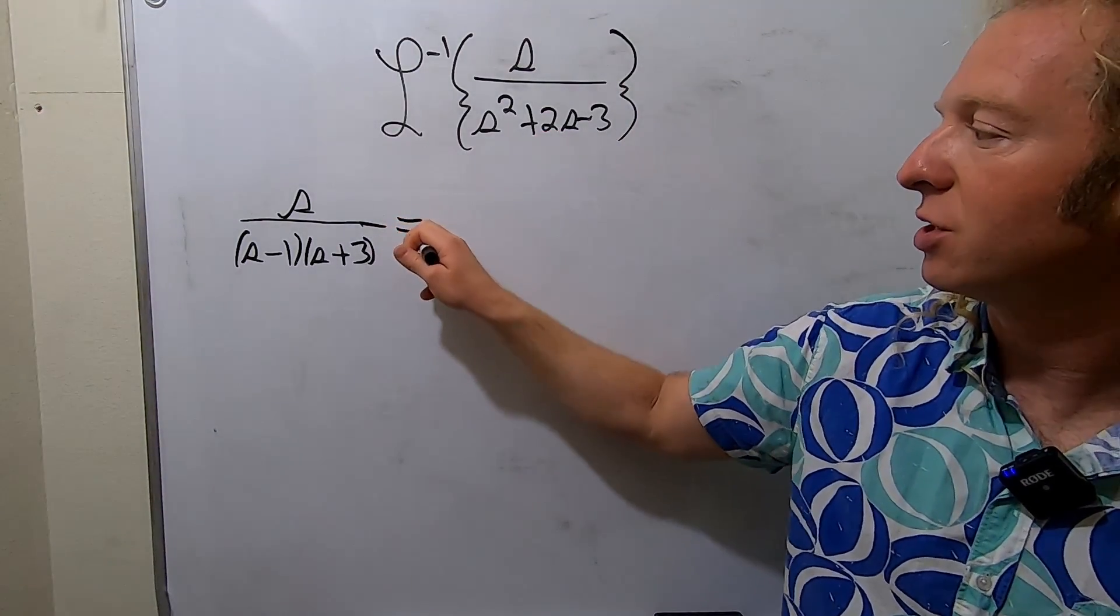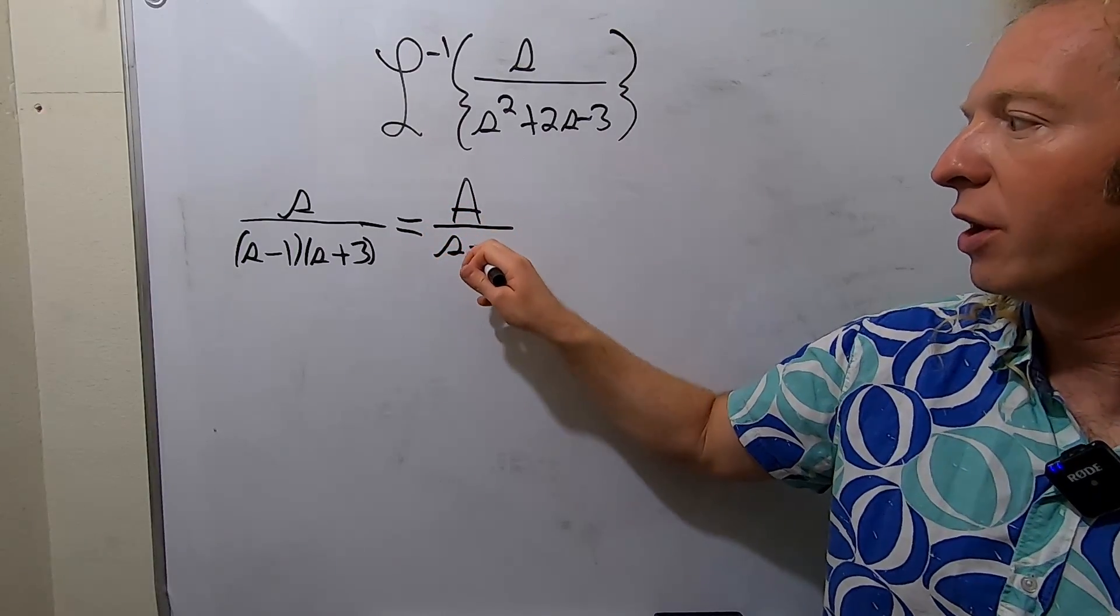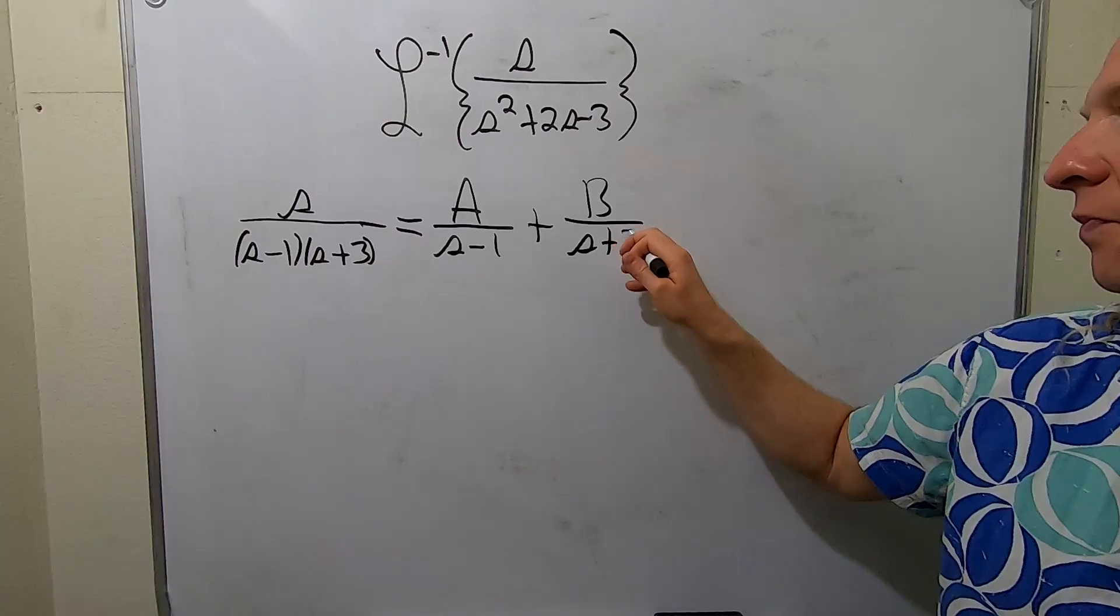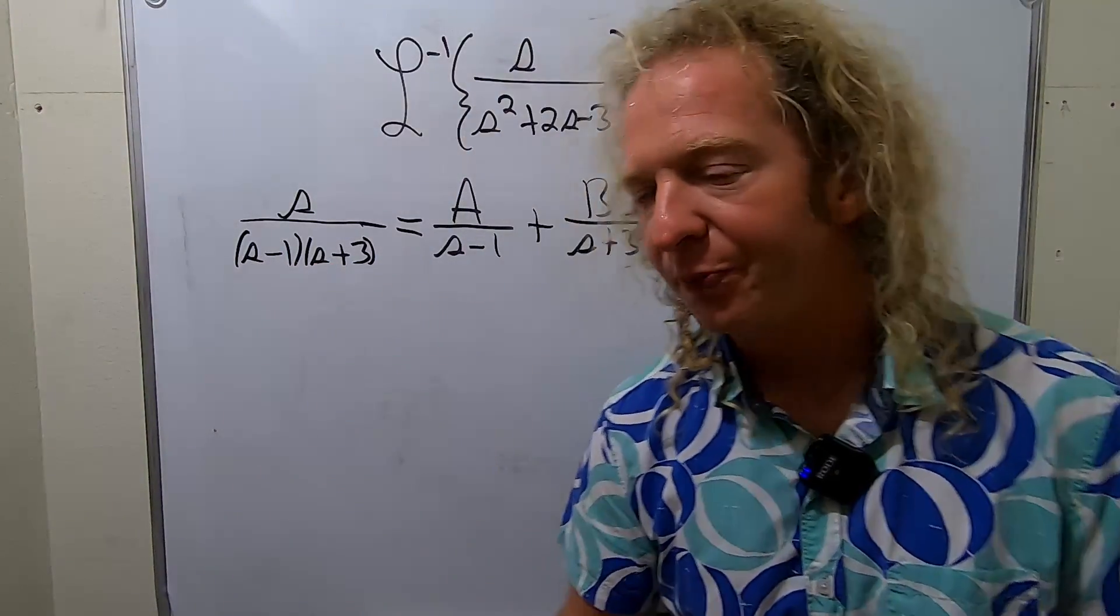So now we're going to use partial fractions. We can write this as A over S minus 1 plus B over S plus 3. That's because these are distinct linear factors.